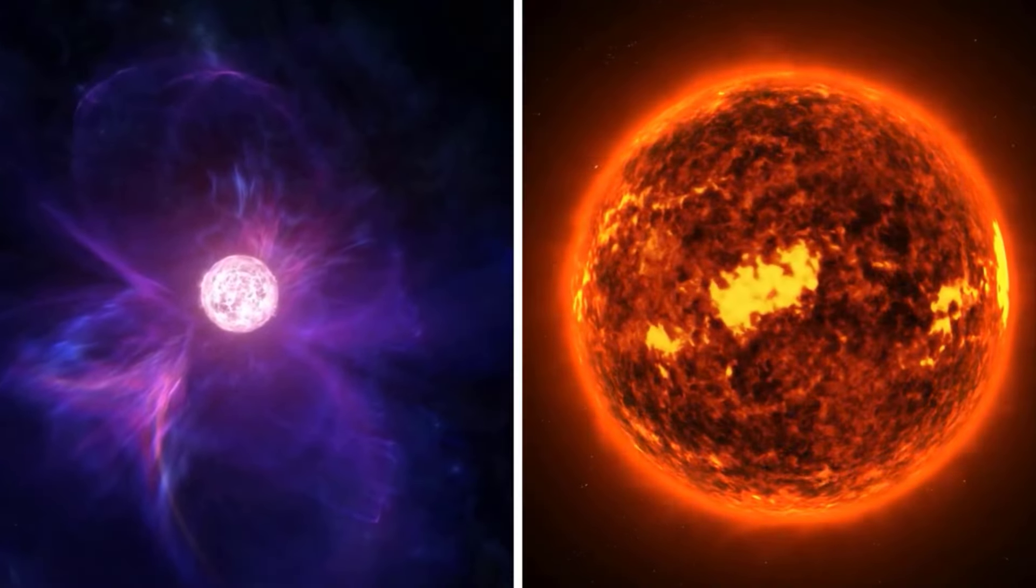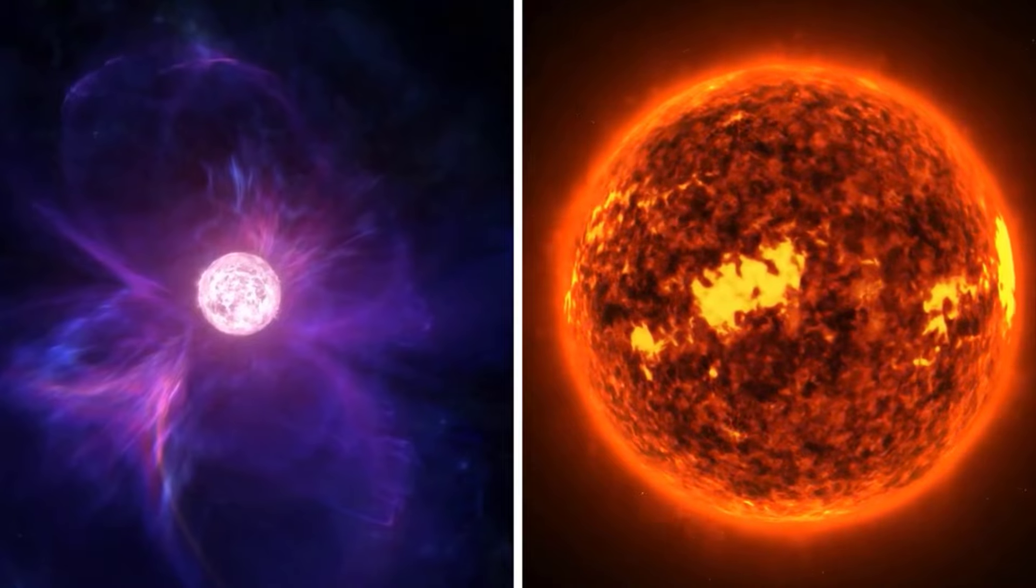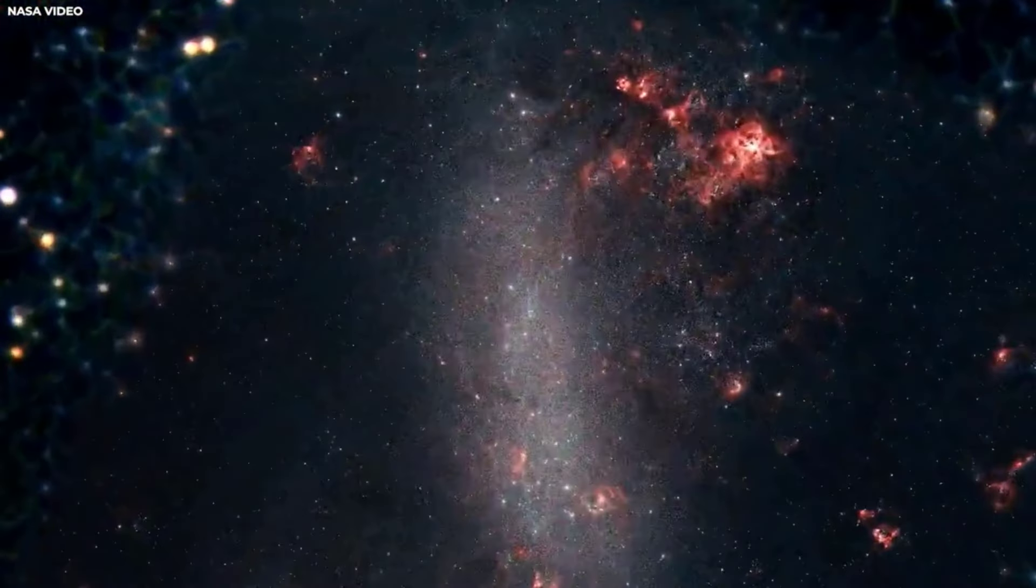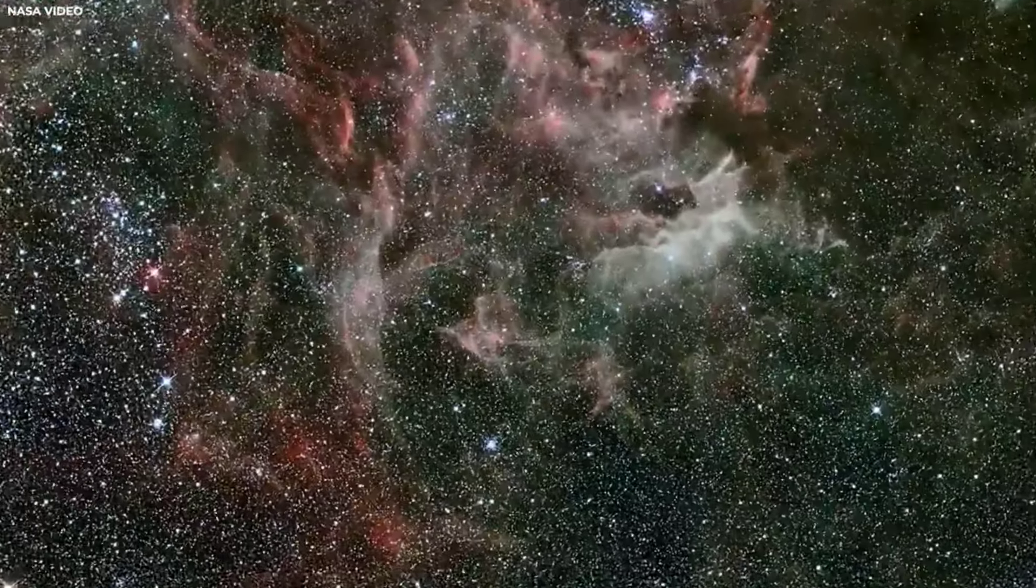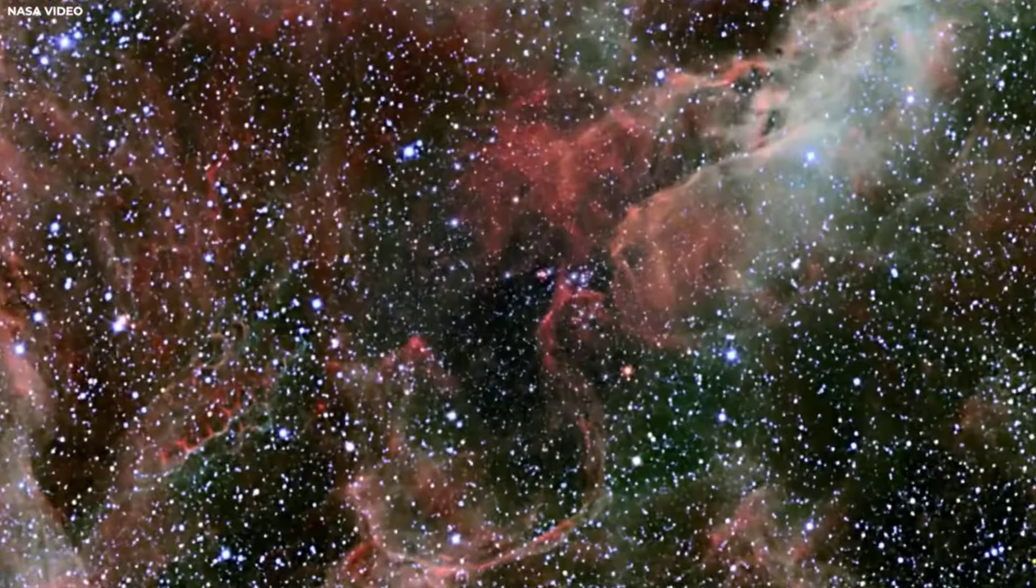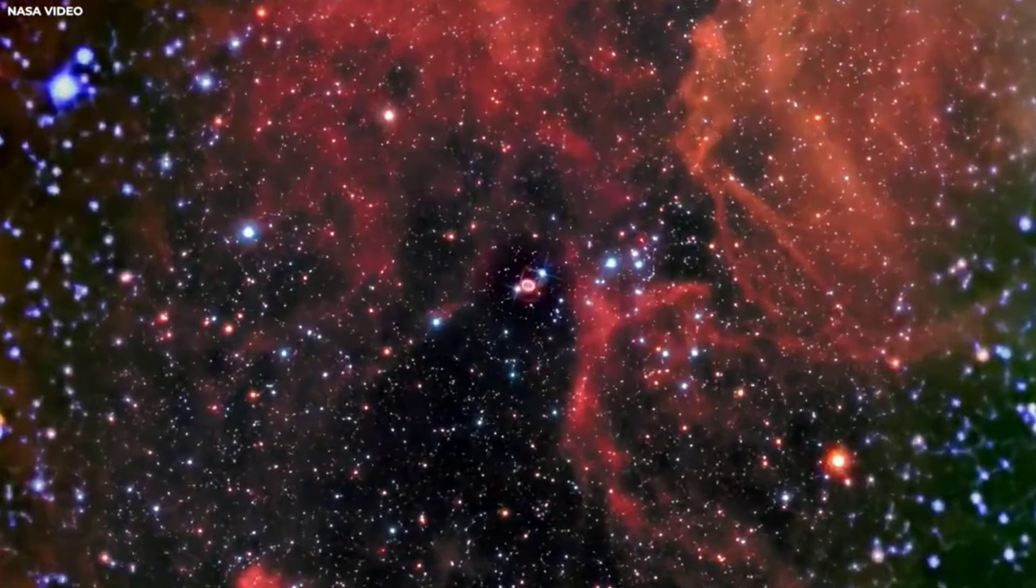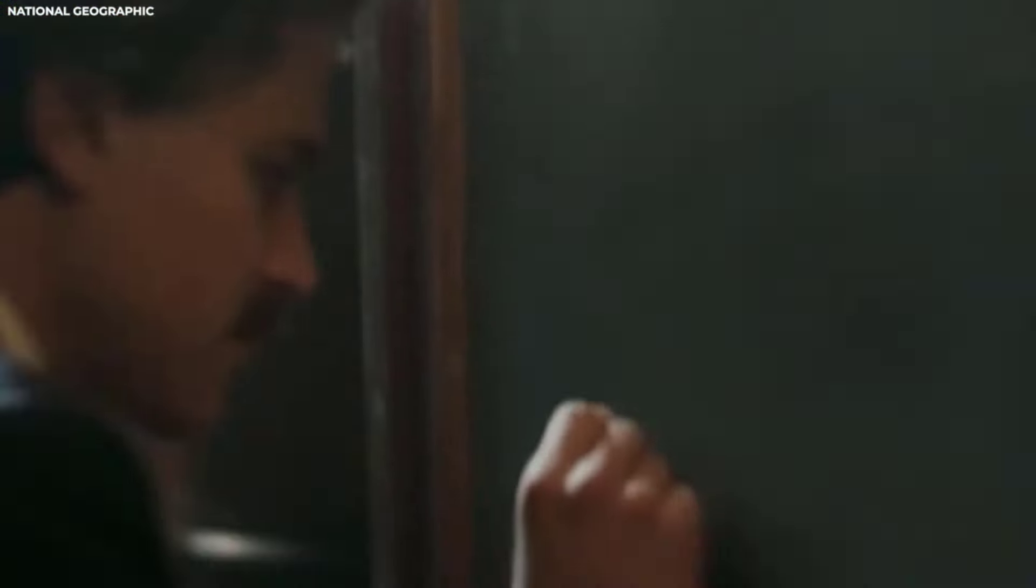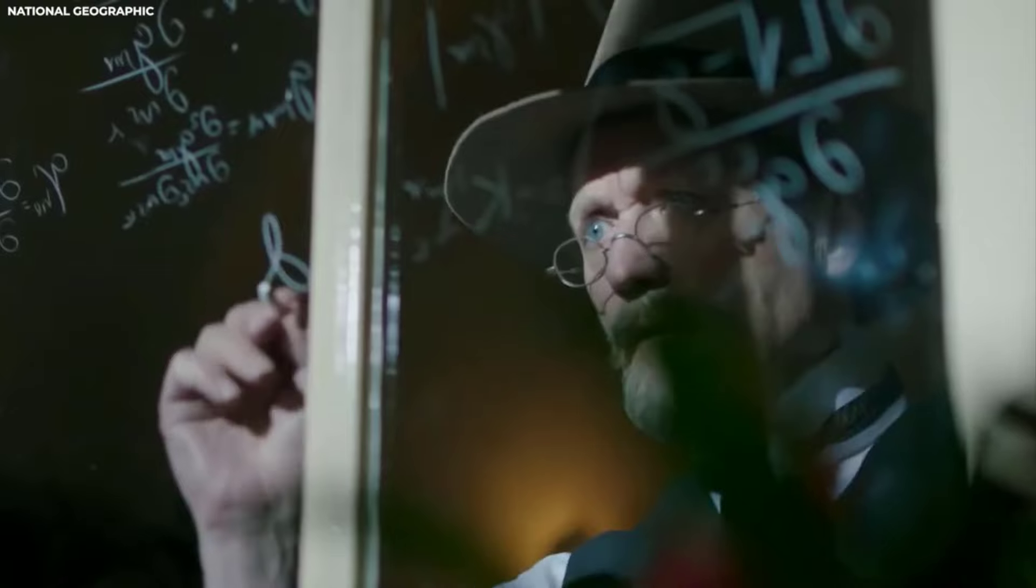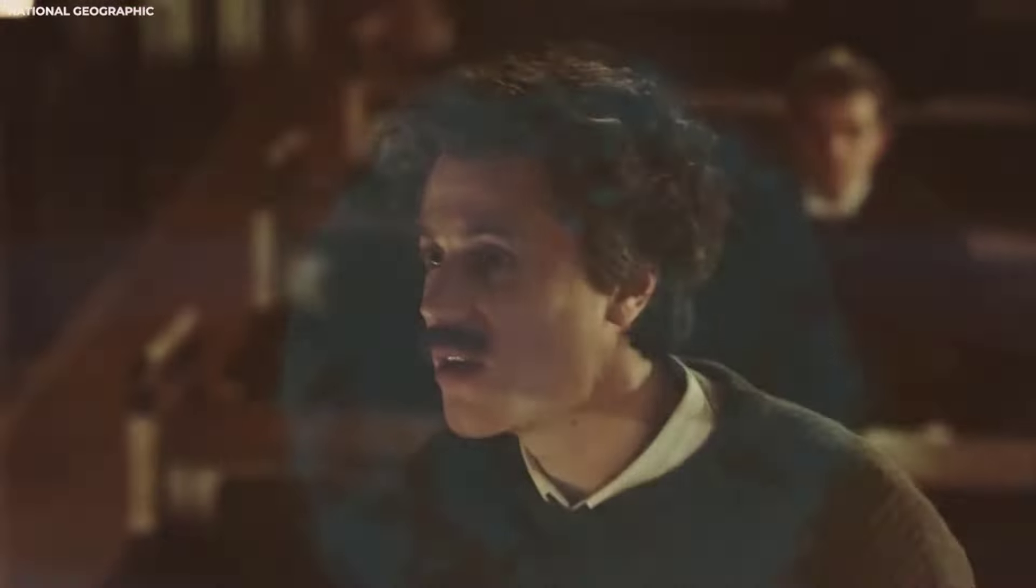A recent example of a visible supernova was SN 1987A, resulting from the detonation of a blue supergiant star in the Large Magellanic Cloud. Scientists classify supernovas into two primary types: thermonuclear runaway and core collapse. The latter variety occurs in the end phase of massive stars, typically those at least eight times larger than our sun, like Betelgeuse.